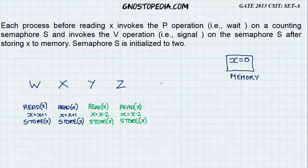Each process before reading x invokes the P operation, that is wait, on a counting semaphore S and invokes the V operation on the semaphore S after storing x to memory. What does this mean? We have a semaphore S and as we know S is initialized to 2. So we have S equal to 2. There is something known as a P and a V operation. For those who don't know, P of S is nothing but you decrement S by 1.